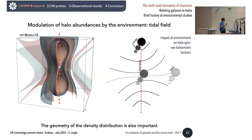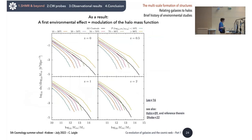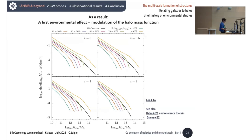Here I show different halo mass functions — number of halos as a function of halo mass — for different redshifts and different density environments shown in different colors. Depending on the density, not only the amplitude of the mass function changes but also the slope. This is a combination of the density amplitude effect and the geometry of the density field. This is the first environmental effect, and since it affects halos, it will also affect galaxies because galaxies are connected to their halos.